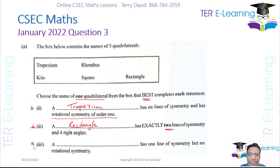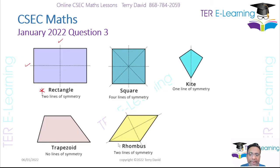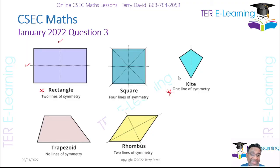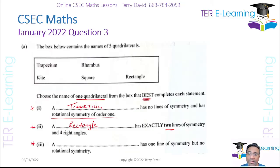The last one: something has one line of symmetry but no rotational symmetry. Based on the diagrams, the only shape with one line of symmetry is the kite. However, if you rotate the kite by 360 degrees it technically lines up with itself, so the order of rotation would be one. But since we need the best answer, the answer here is kite.